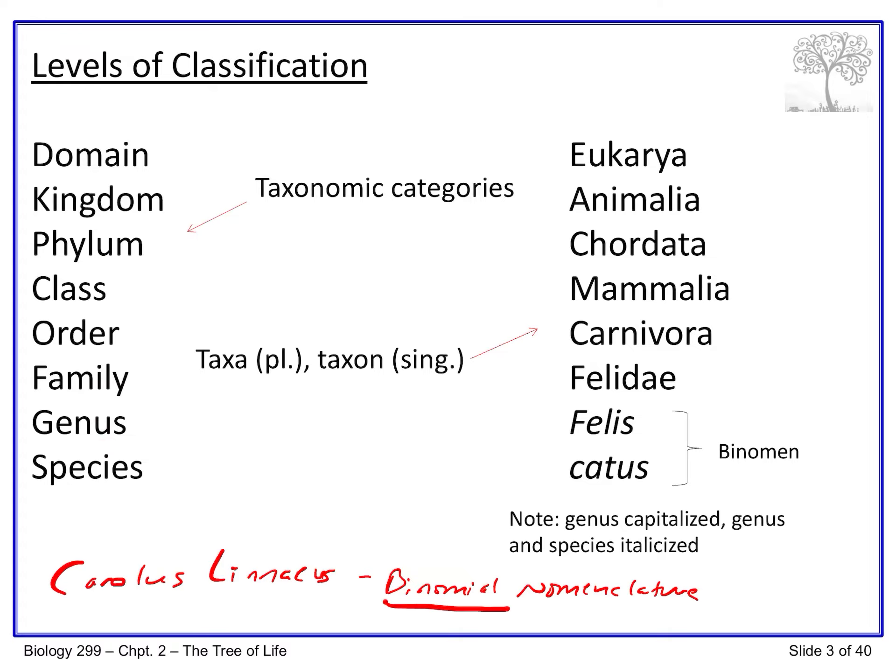Bats are no longer grouped with primates today. It's recognized that the two-nipple condition evolved multiple times independently and is therefore not a reason to group bats with primates. Without an evolutionary framework, these pre-Darwinian classifications were not objective — they were based solely on the opinion of the person doing the categorization, and sometimes based on similarities that were superficial only.